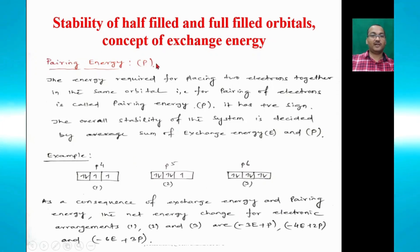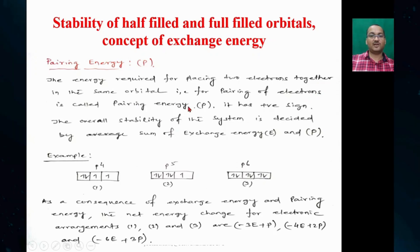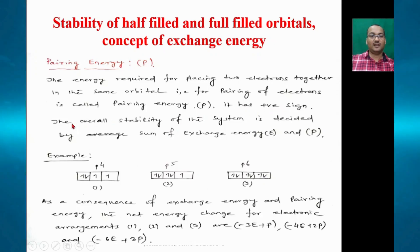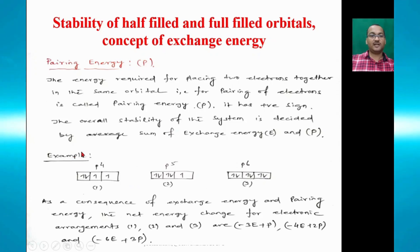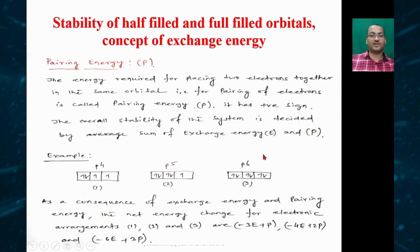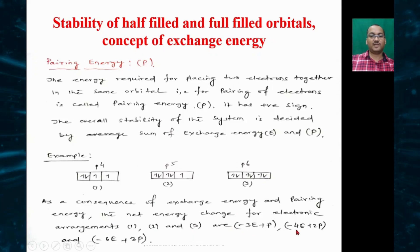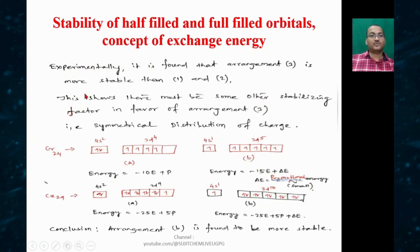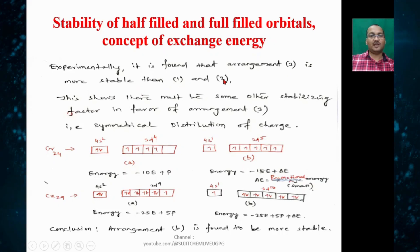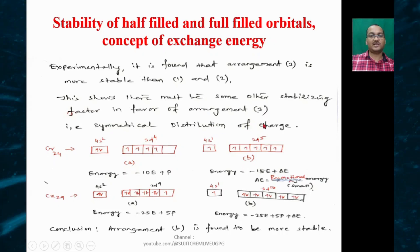Pairing energy P is the energy required for placing two electrons together in the same orbital; it has a positive sign. The overall stability is decided by the sum of exchange energy and pairing energy. For p⁴, p⁵, and p⁶ configurations, the net energy changes are −3e+P, −4e+2P, and −6e+3P respectively. Experimentally, arrangement p⁶ (arrangement 3) is more stable, indicating there must be an additional stabilizing factor — the symmetrical distribution of charge.